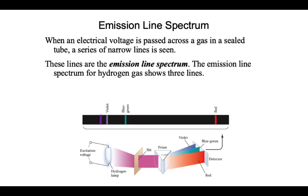So what does this mean? We have this theory that it should be a big continuous purple thing, and instead we see these weird lines. What are those lines due to? We're pumping electric current in — we know those are electrons — so we could hypothesize that this is due to something with the electrons.